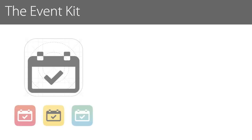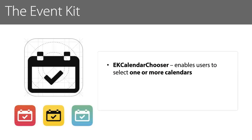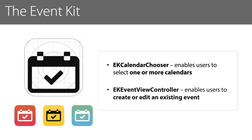These elements include the EKCalendarChooser, which is an interface element that enables a user to select one or more calendars, and the EKEventViewController, which is an interface element that enables a user to create or edit an existing event.